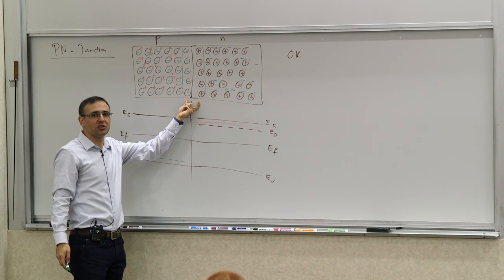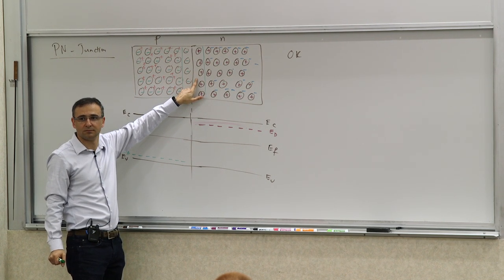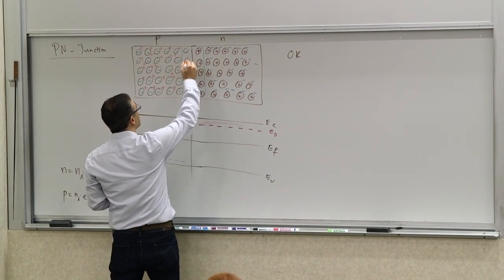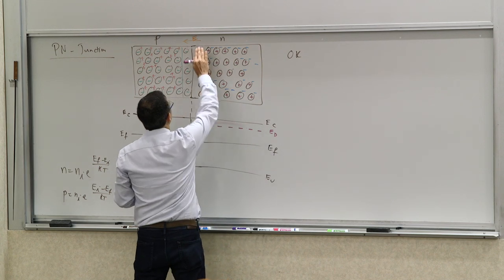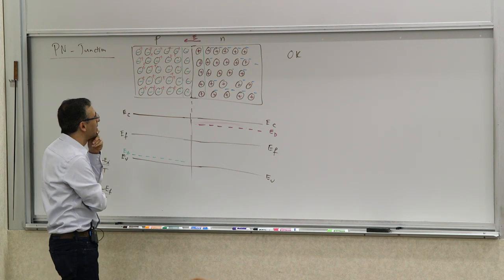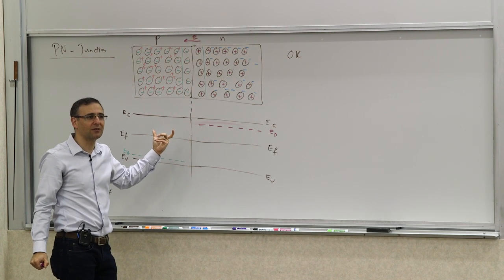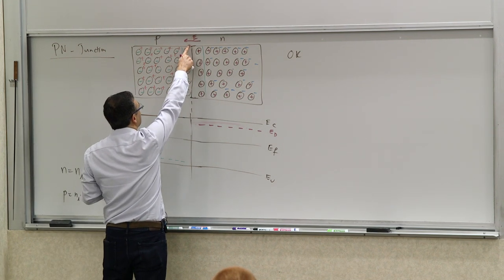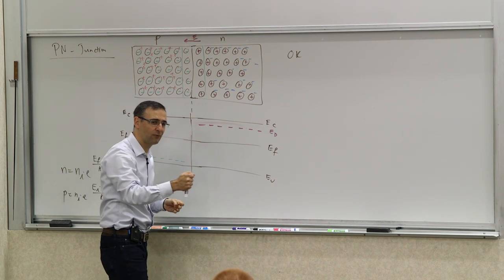What is going on in this depletion region? You have a little bit of an electric field, because now you have positively charged ions on one side that cannot move — they're stuck, they're bound — and negatively charged on the other side. So there is an electric field built in. What does this electric field do to the process? Does it facilitate or impede the random movement of electrons from one side to the other and holes from the other side? If there's an electric field pointing in this direction, is it easier for a positive charge to go from this side to that side?